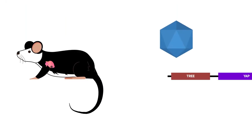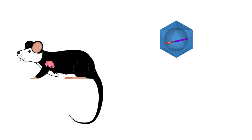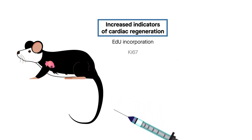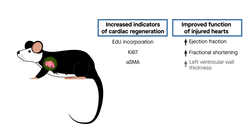Moreover, intravenously injected TREE vectors that delivered a constitutively activated form of the transcriptional regulator YAP to heart-attack-injured tissue in mice increased indicators of actual cardiac regeneration and improved the function of the injured hearts. This confirmed that the TREE's molecular effects translated into real therapeutic effects.